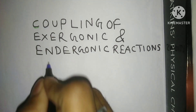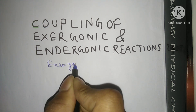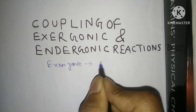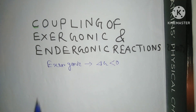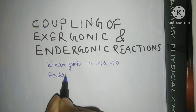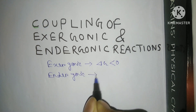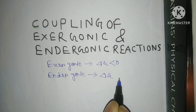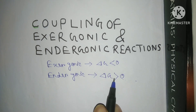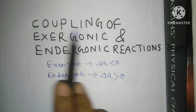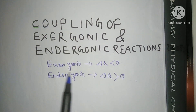For exergonic reactions, the change in Gibbs free energy is negative — less than zero — meaning it is spontaneous. For endergonic reactions, the change in Gibbs free energy is positive, meaning the process is non-spontaneous. When the change in Gibbs free energy is positive, the process is non-spontaneous; when negative, it is spontaneous.